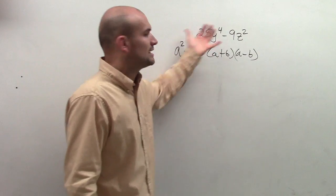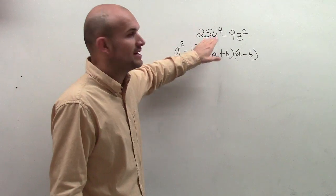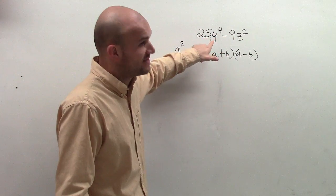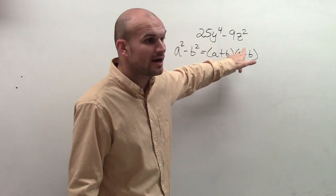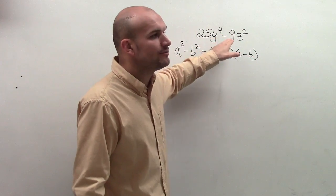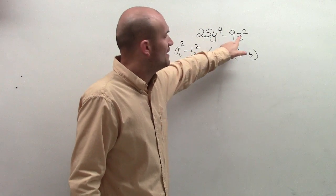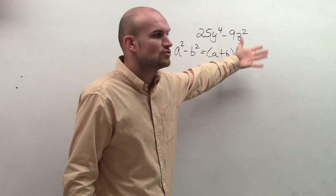So when I automatically look at this problem I'm looking at my numbers and I notice that 25 that's a square number and 9 is a square number. I just need to see can I rewrite y to the 4th and z squared as square numbers.